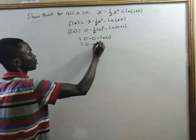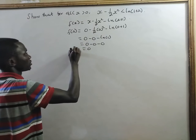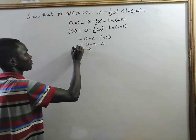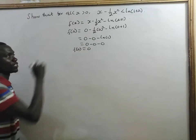Which is 0 minus 0 minus 0. That is 0. So, f(0) is 0.